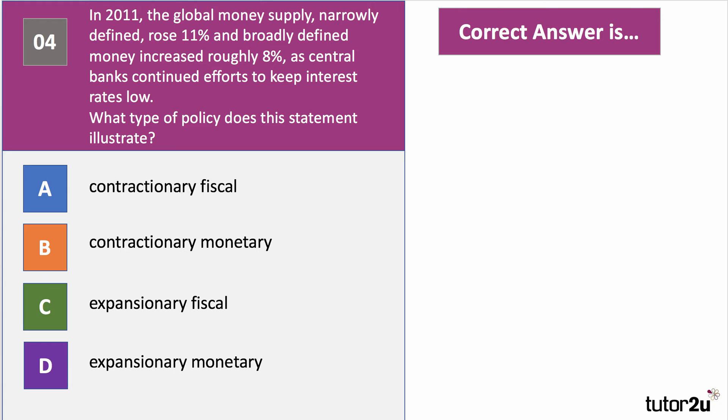Question 4: In 2011, the global money supply, narrowly defined, rose by 11%, and broadly defined money increased roughly 8%, with central banks continuing efforts to keep interest rates low. What type of policy does this statement illustrate? Have a go and press pause.